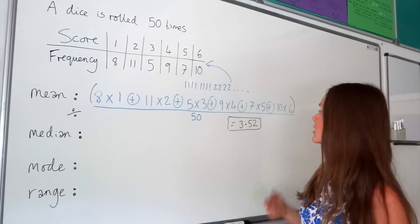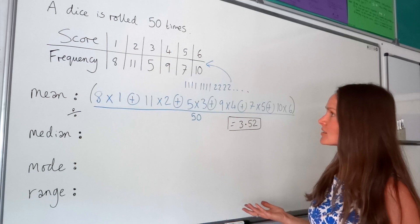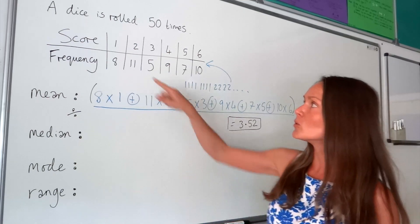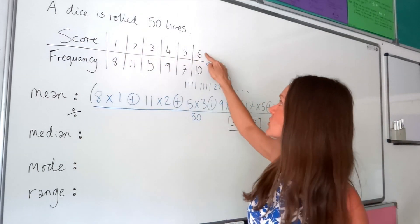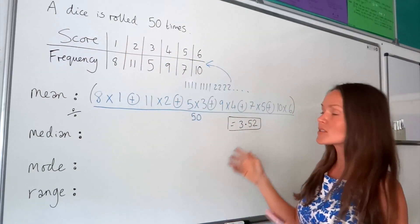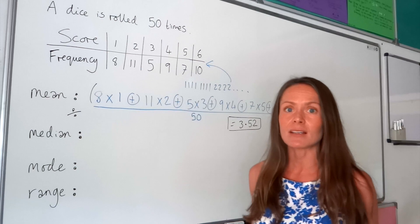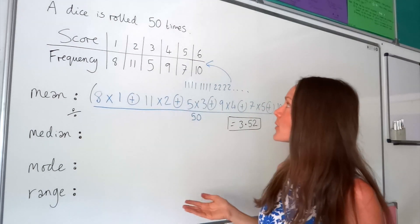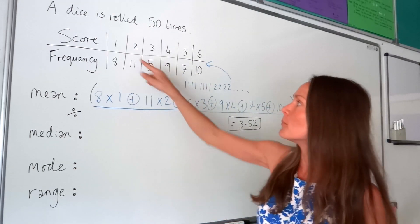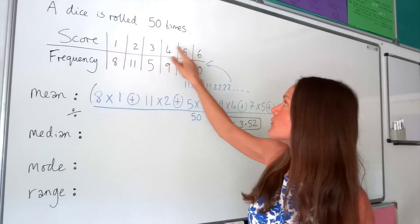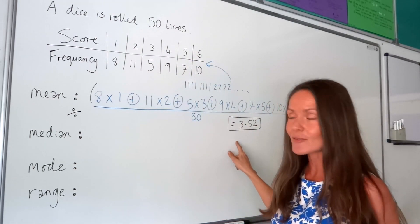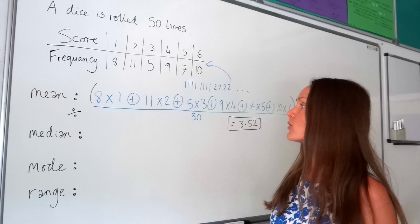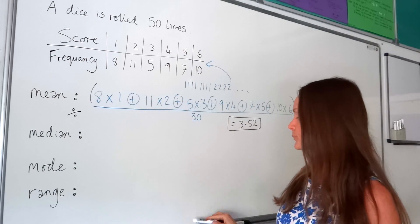So 3.52 is the mean average for the scores when rolling the dice 50 times. That makes sense because the smallest score is 1 and the largest is 6, and 3.52 falls somewhere in between — which it must do.